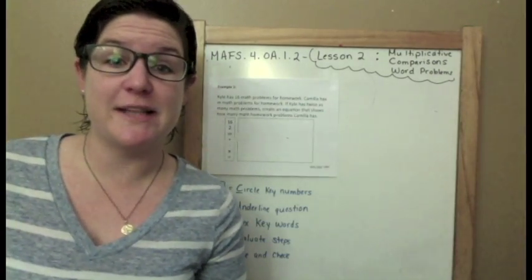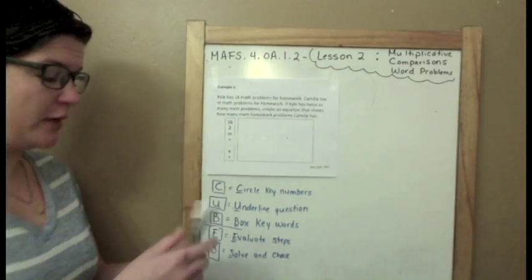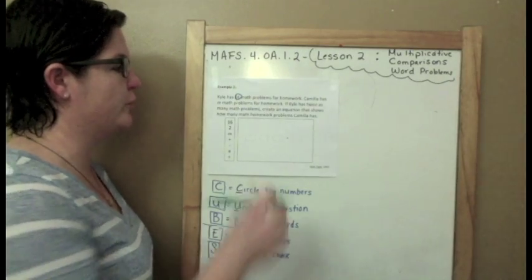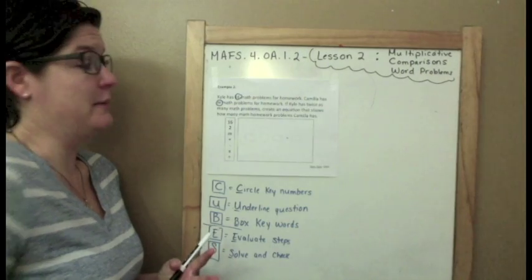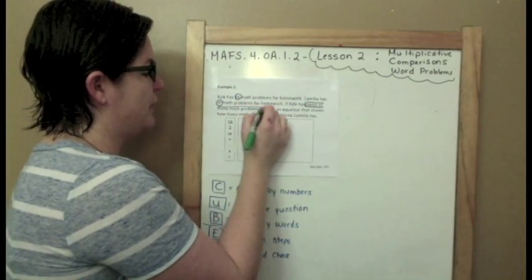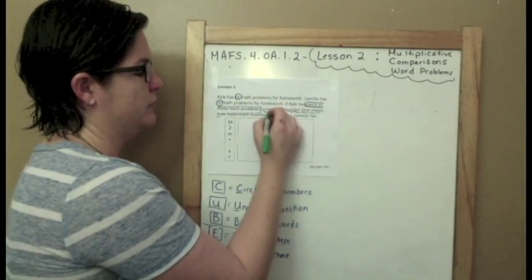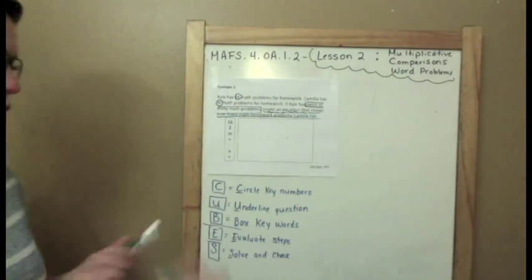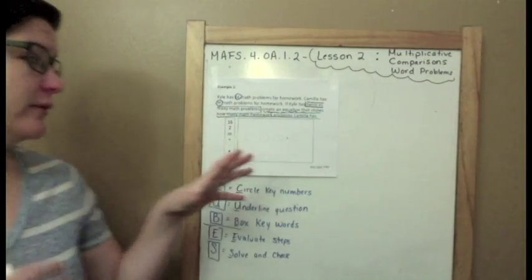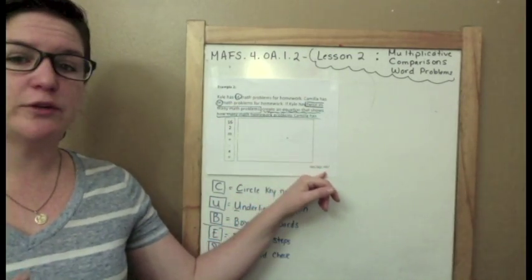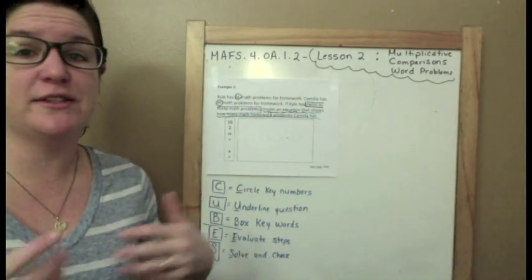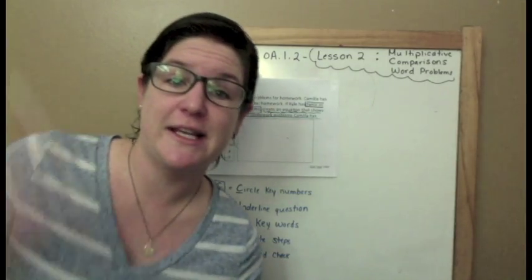Let's get back to Example 2. Kyle has 16 math problems for homework, Camille has M math problems, we don't know how many math problems she has yet. If Kyle has twice as many math problems, create an equation that shows how many math homework problems Camille has. This is very similar to the last question, but we just have a different type response mechanism. This is a gridded response, and this is what it would look like on the computer, which you'll be taking next year. But I just want to make sure that you understand this because they could have some kind of way to do this for your paper-based test this year in 2016.